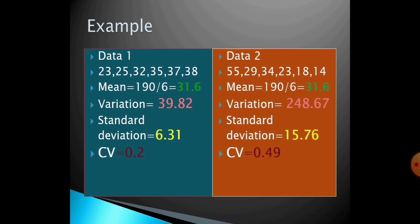Consider data set 1 and data set 2. In data set 1 the elements are 23, 25, 32, 35, 37, and 38. The mean is 190 divided by 6, which is 31.6. In data set 2 the elements are 55, 29, 34, 23, 18, and 14. The mean here is also 190 divided by 6, giving 31.6.